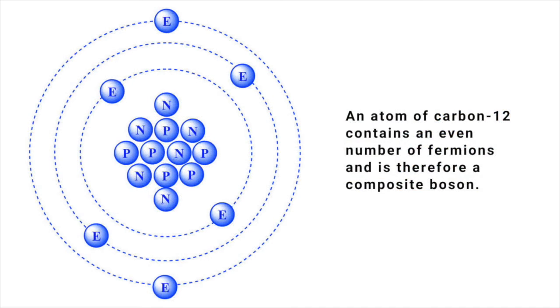Composite particles such as hadrons, nuclei, and atoms can be either bosons or fermions depending on their makeup. Since bosons have integer spin and fermions odd half-integer spin, any composite particle made up of an even number of fermions is a boson.